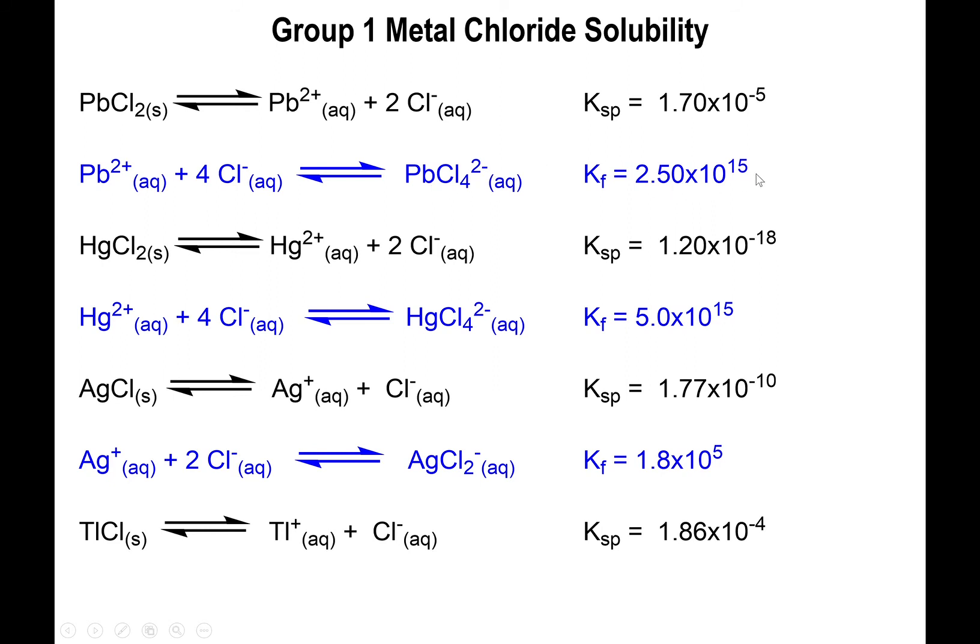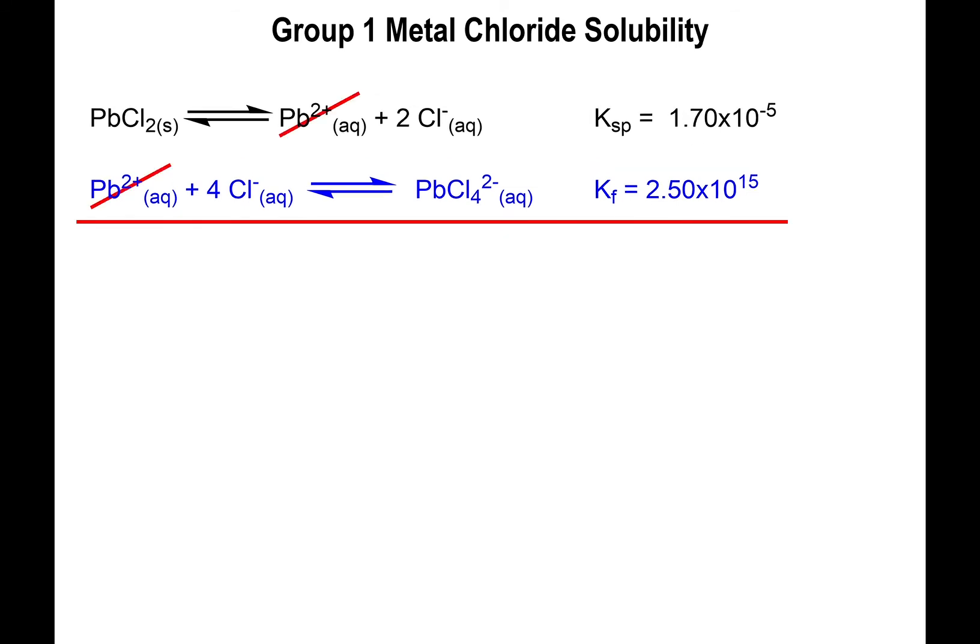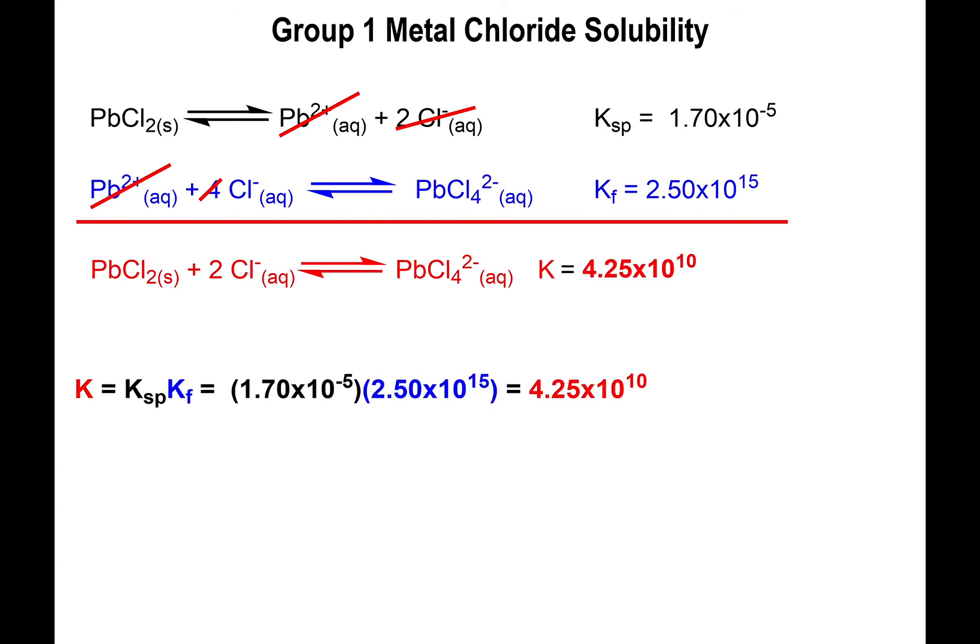And so as you can see for lead, something's going to happen that's rather interesting. On the one hand, yes, you do have a KSP associated with the formation of the salt, but the formation of the anionic complex is even more favored than just keeping it at the solid state. So if you actually add up these two equations, I want to show you what happens. Yes, the lead 2+ cancels out and the two chlorides cancel out, leaving you only with two extra chlorides here for your balanced equation. So you have lead dichloride plus two extra chlorides, giving you the tetrachloroplumbate ion. And since all we did here is just added two equations, all we need to multiply the two equilibrium constants, the KSP times the KF, meaning that you end up with an equilibrium constant that's favored in the product.